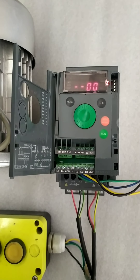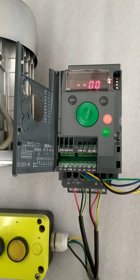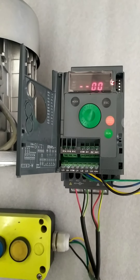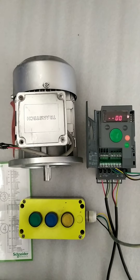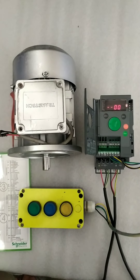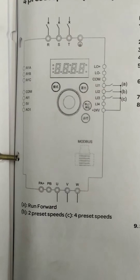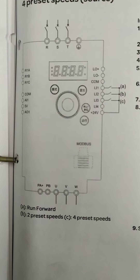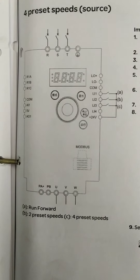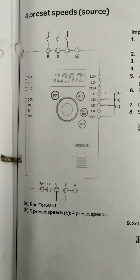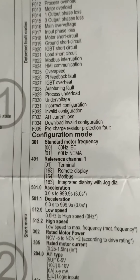We have set motor connection and push button input to the drive. To make 3 preset speeds, we make some arrangements with the motor and 3 push buttons for obtaining 3 speeds. We have taken command 24V for the 3 push buttons. For the first preset speed we have taken LI1, for second speed LI2, and for third speed LI3.